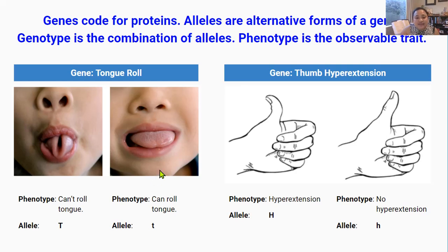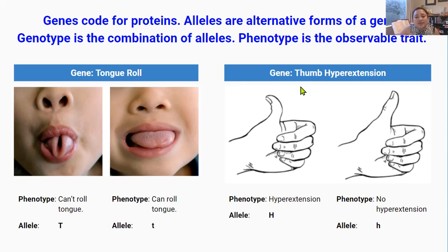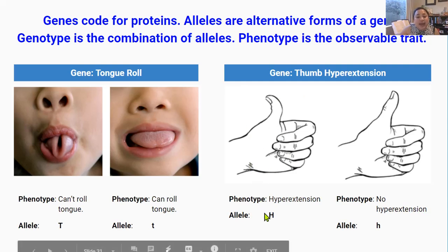I just realized I've got those two pictures the wrong way around — being able to roll your tongue is meant to be on one side and not being able to roll your tongue on the other. And here is the gene for the ability to hyperextend your thumb, also known as a hitchhiker's thumb. Being able to hyperextend your thumb is dominant so it gets capital H, and not being able to hyperextend your thumb is recessive so it gets lowercase h.